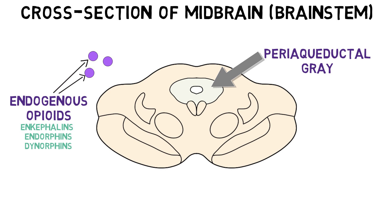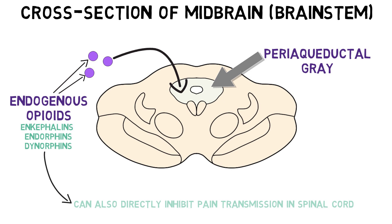Endogenous opioids can activate neurons in areas like the periaqueductal gray to cause pain relief, but they can also bind to receptors in the spinal cord, inhibiting pain transmission there as well. Regions that have a high number of opioid receptors are also regions susceptible to the actions of opioid drugs.